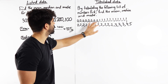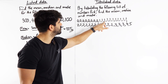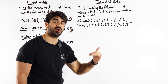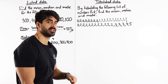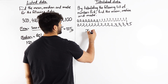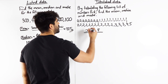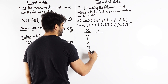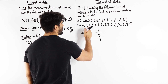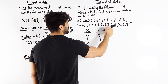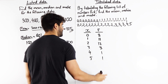Instead of adding 0 to itself 8 times, I just do 8 times 0. Instead of adding 1 to itself 11 times, I do 1 times 11. This is easiest done with a table. Here are my values — let's call them x — and f is the frequency of numbers. So: 3 occurs 3 times, 4 occurs once, and 5 occurs once.